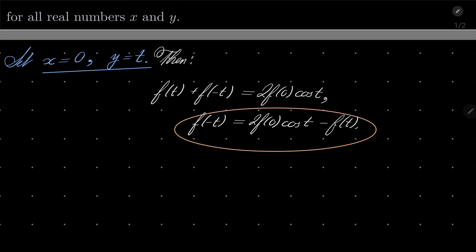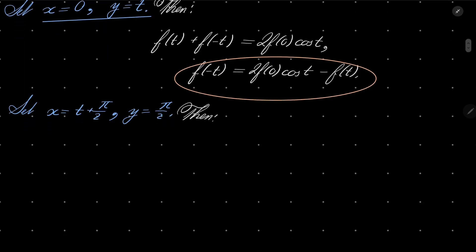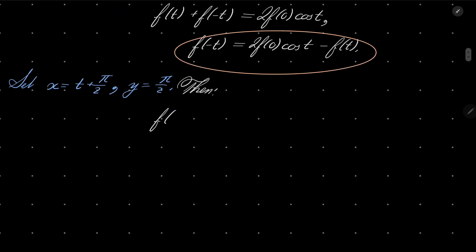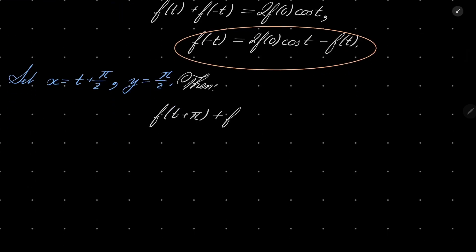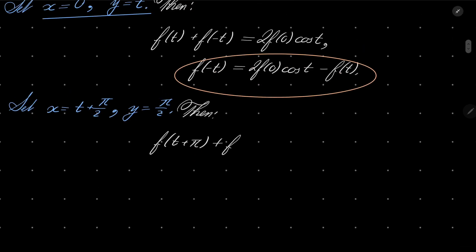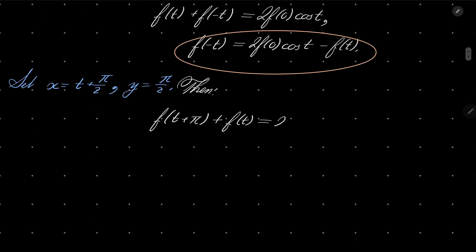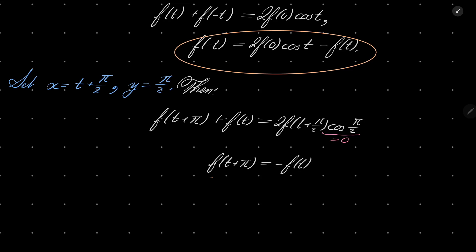Now let's set x = t + π/2 and y = π/2. Then we have f(x+y) = f(t+π), and f(x-y) = f(t). On the right hand side we have 2·f(t + π/2)·cos(π/2). But cos(π/2) is just zero. So we have: f(t+π) = -f(t). Let's mark this — we'll use it in a minute.